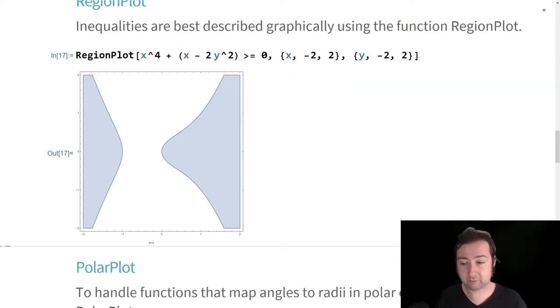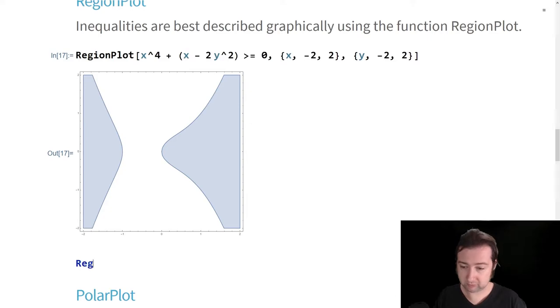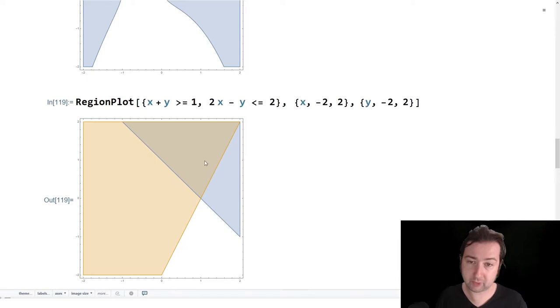You can use region plot for compound equations as well. Here's an easy example. Suppose that you want x plus y to be greater than or equal to one and also you would like two x minus y to be less than or equal to two. You're looking to solve this equation for the same square that we started with. When you do your region plot, you will get this overlapped region, which is going to be the set that solves both equations simultaneously.